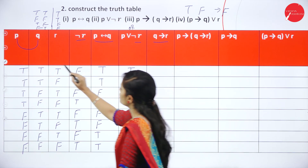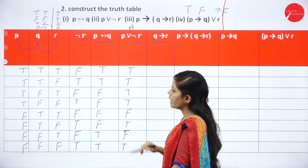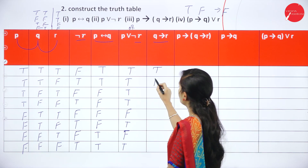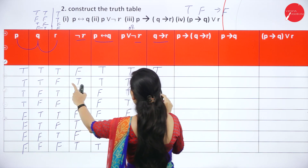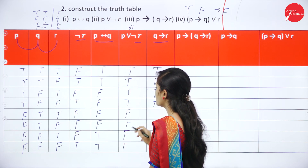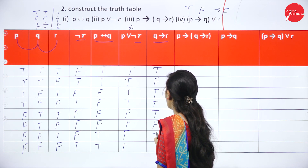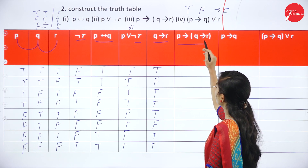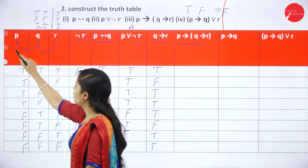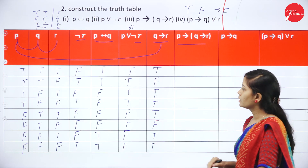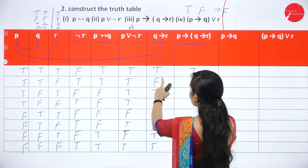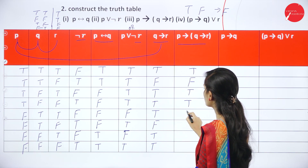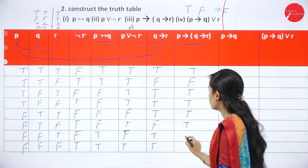Now find P → (Q → R) using the P column with the Q → R column. In implication: true → true = true, true → false = false, false → true = true, false → false = true. Apply these rules: where P is true and Q → R is false, the result is false; otherwise true.